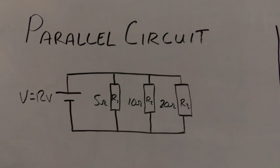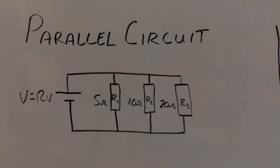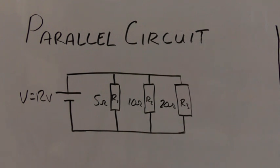For this parallel circuit, we're going to find five values. Value 1 is the total voltage of the circuit. Value 2 is the equivalent or total resistance of the circuit. Value 3 is the total current through the circuit. Value 4 is the voltage drop across each resistor, and value 5 is the current through each resistor.